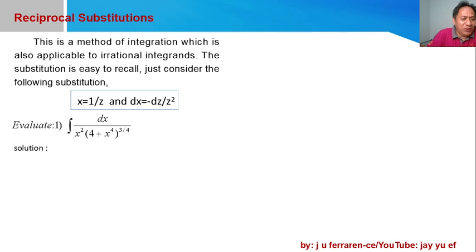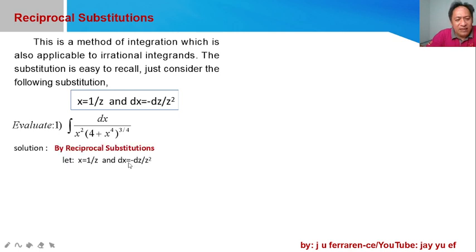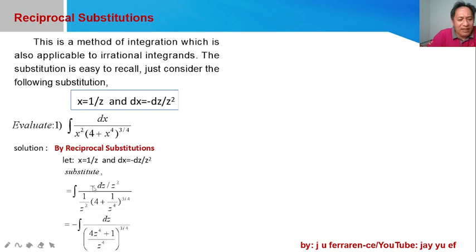Using the reciprocal substitution, x is replaced with 1 over z, so our differential dx is equal to negative dz over z squared. Applying the substitution to our given, dx is replaced with negative dz over z squared, and since x squared equals (1/z)², we have 1 over z squared.